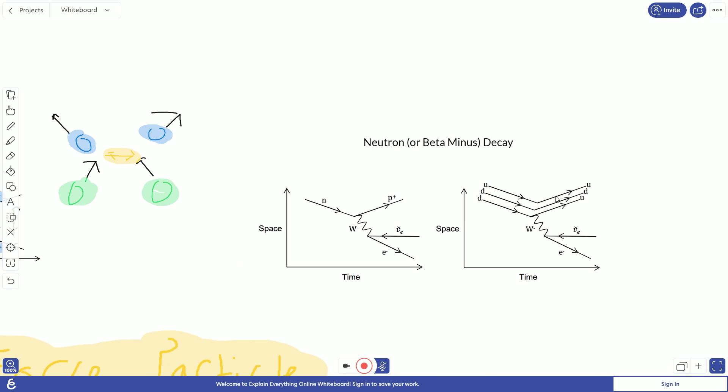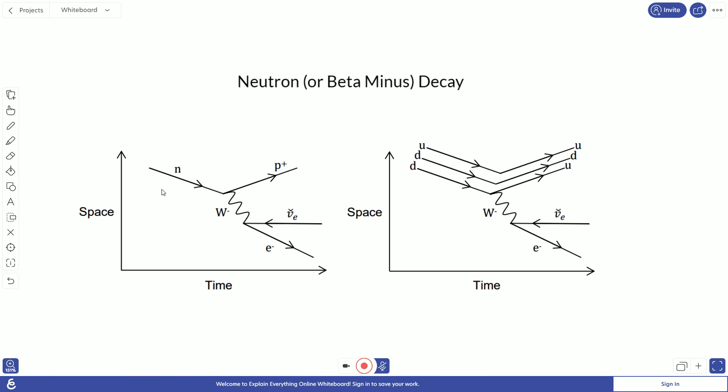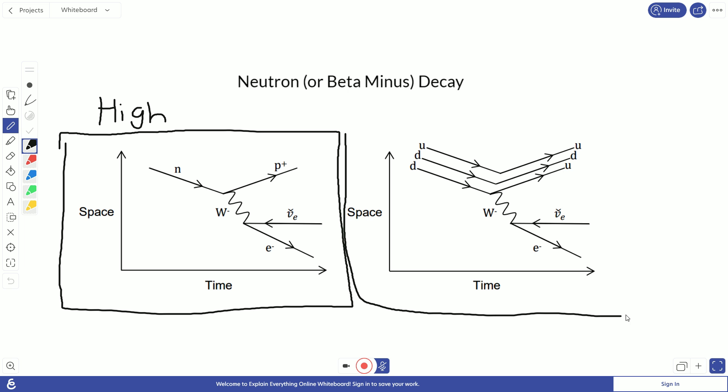And our final interaction is beta minus or neutron decay. Over here we have a high level look at what's going on in that decay. And on the high level, we see our initial products, and they're a neutron, a single neutron. And then that neutron is mediated again by a force carrying particle, in this case the W minus, which is part of the weak nuclear force.